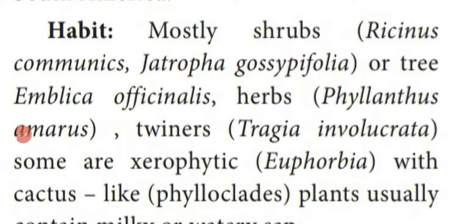Habit: Most plants are shrubs, more than 7 feet in height. Examples include Ricinus communis, which is Amanak, and Jatropha gossypifolia, which is known as Kattamanak. Some species are trees, for example Emblica officinalis — that is gooseberry in English, Nelli in Tamil.